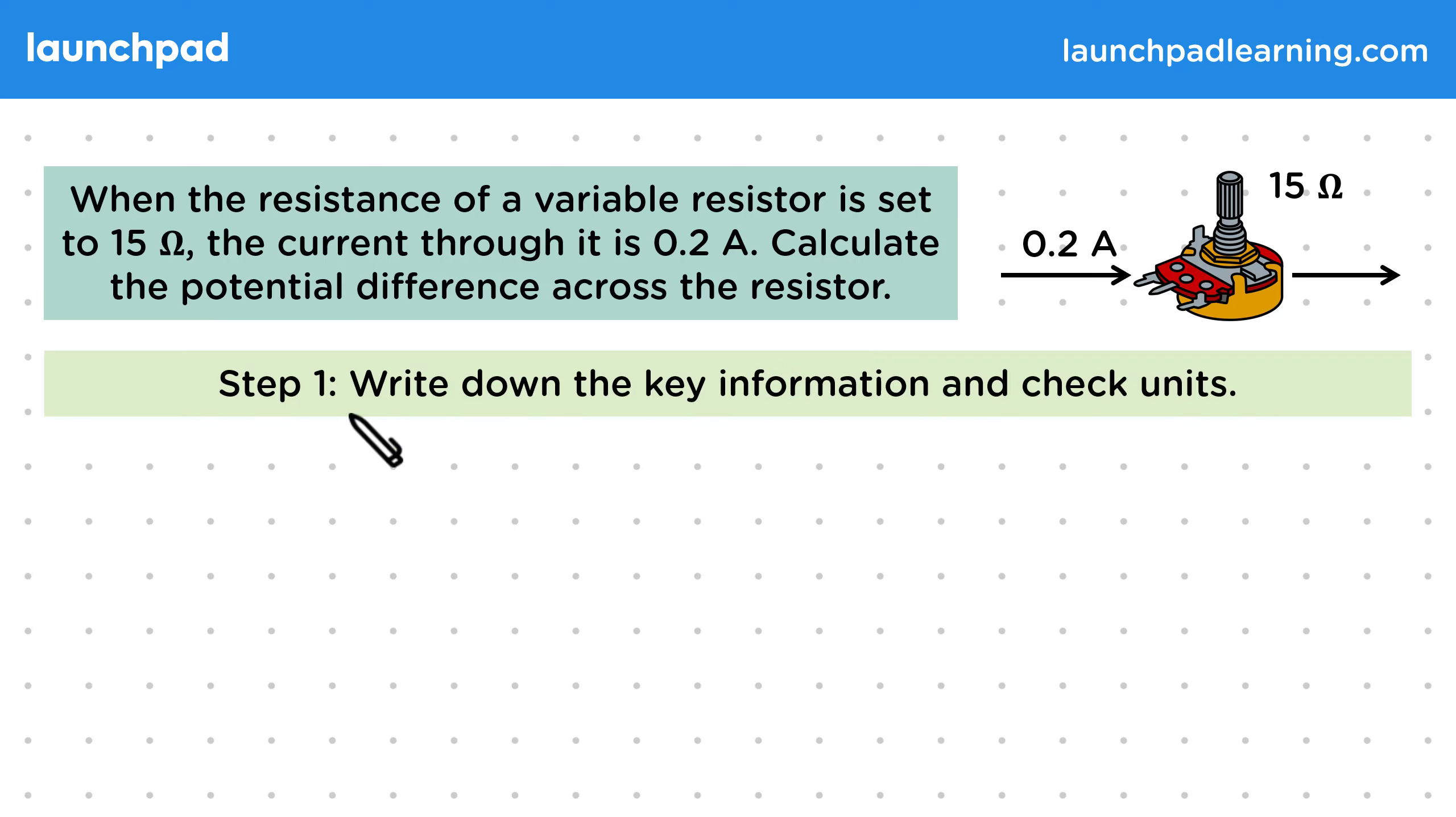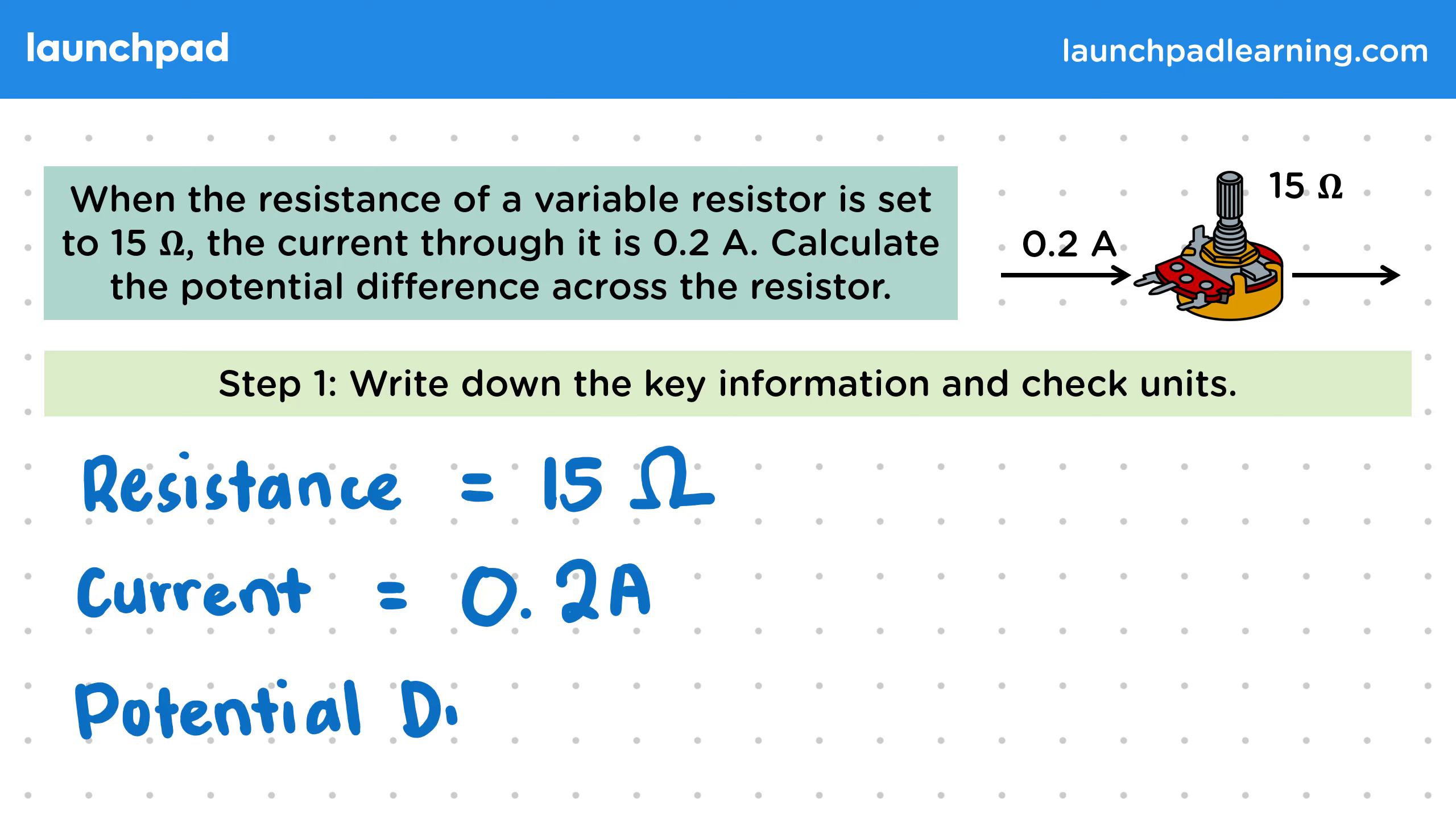So for the first step, let's write down the key information and check the units. The resistance is 15 ohms, and the current through the resistor is 0.2 amps. We want to calculate the potential difference.